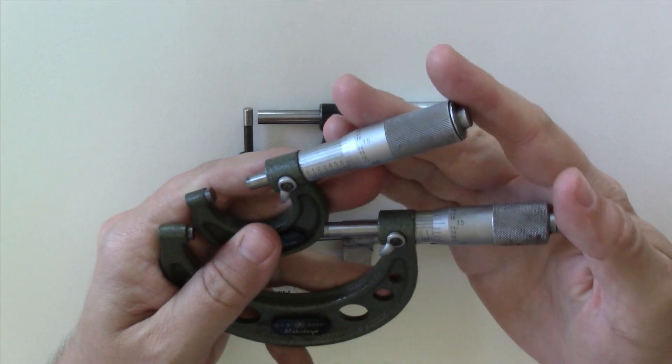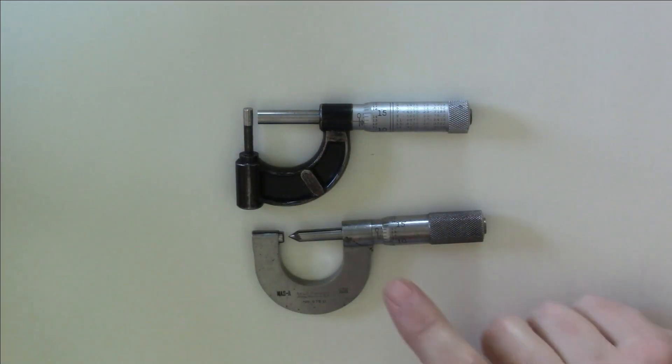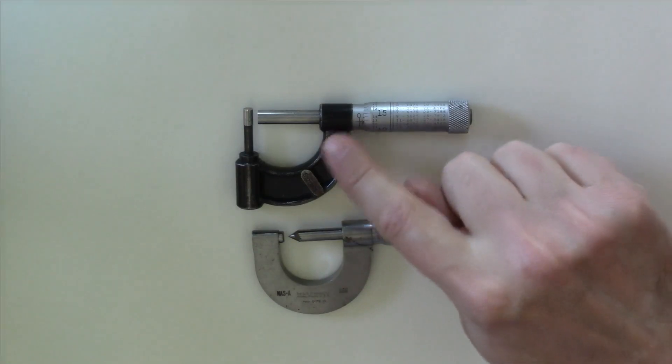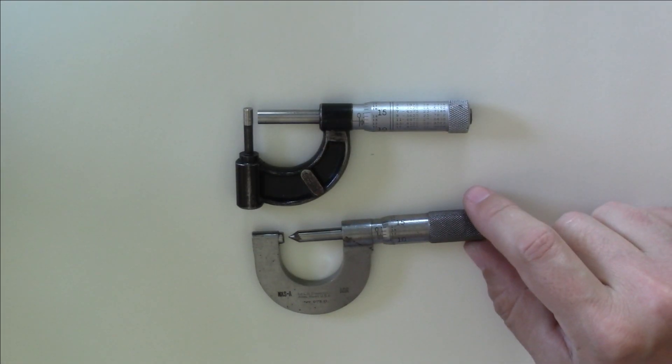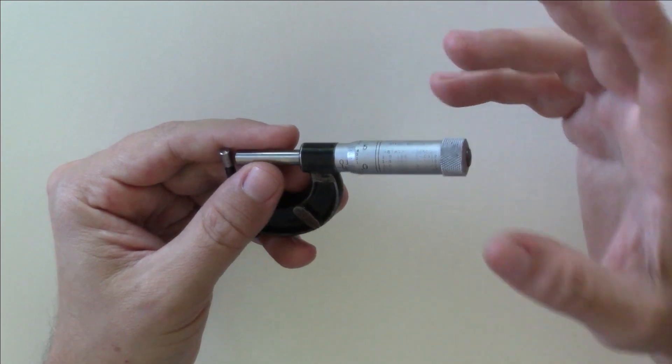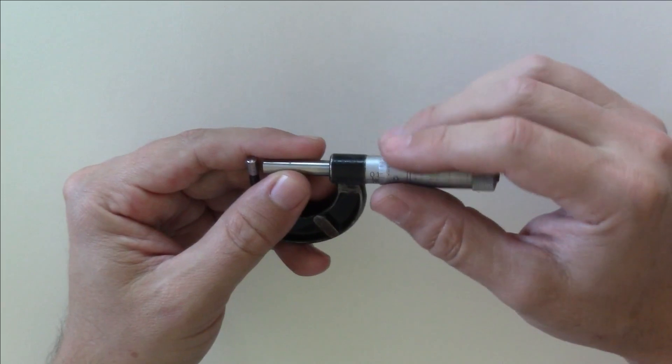Most newer micrometers will have these features, but older mics and some specialty mics like this thread micrometer or this tubing micrometer might just have a plain solid thimble. If this is the case for you, grab the smooth part of the thimble and just let it slip in your fingers.